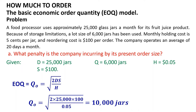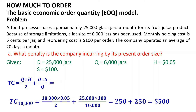Now calculate the total cost corresponding to the economic order quantity Q0. TC(10,000) equals 10,000 multiplied by 0.05 divided by 2, plus 25,000 multiplied by 100 divided by 10,000, equal to 250 plus 250, equals $500.